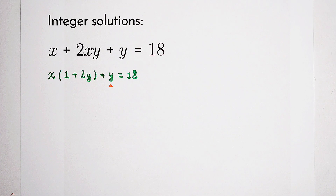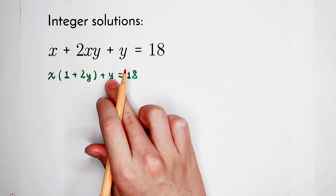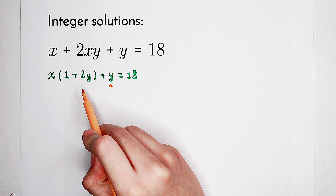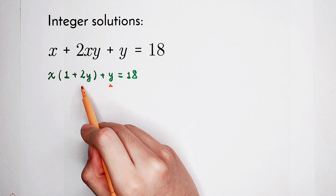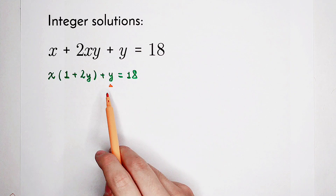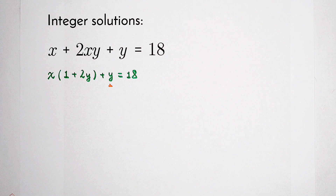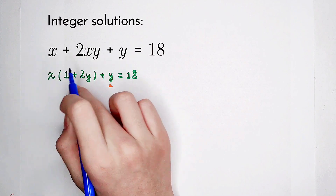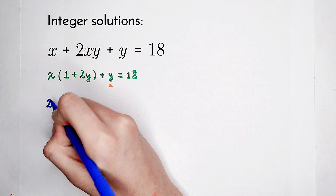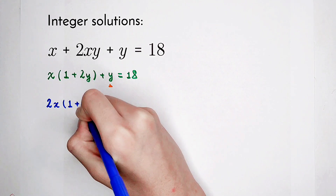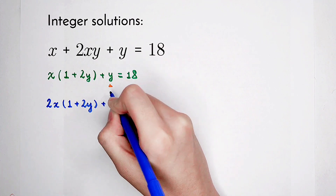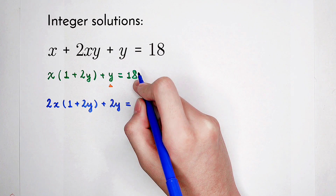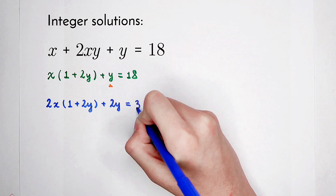So what should we do? If we want to factorize the left-hand side, we should take out a (1 plus 2y). But here is only a y — we lack the coefficient 2 and the 1. Our only choice is to multiply both sides by 2. So here, x times (1 plus 2y) multiplied by 2 is 2x times (1 plus 2y), and then plus 2y. Don't forget the right-hand side: 18 times 2 is 36.